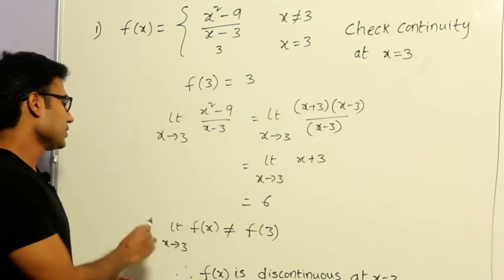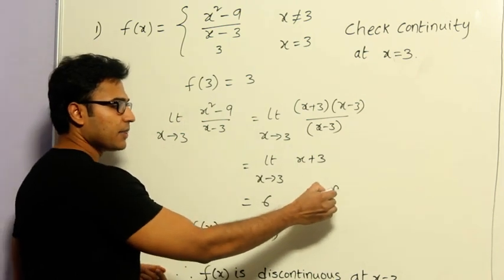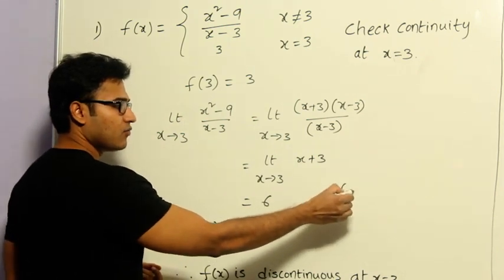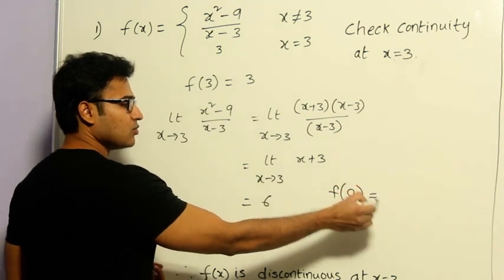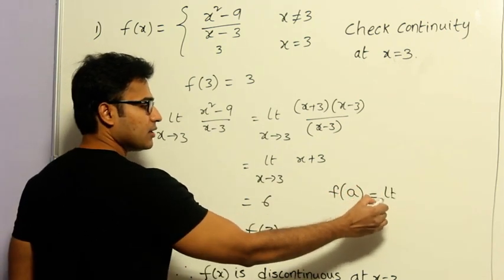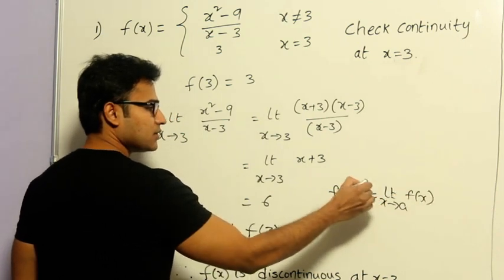There are various definitions. According to the first definition, you can check this. So what is it? If you are talking about a point A, then you should check whether the function value at that point is equal to the limit, limit x tends to A of f of x. You can check whether this is equal or not.